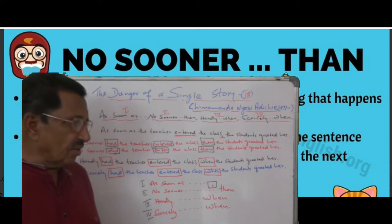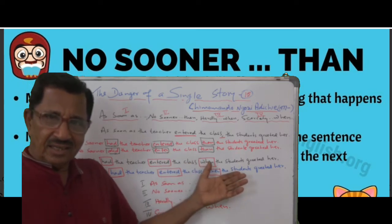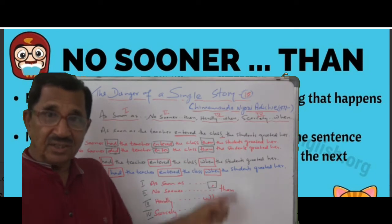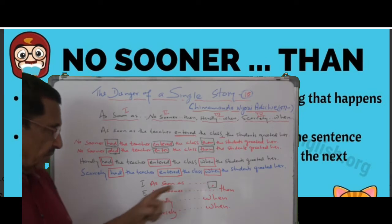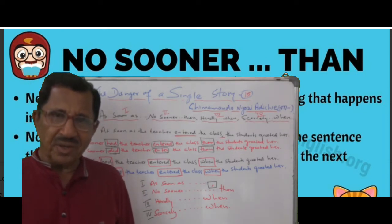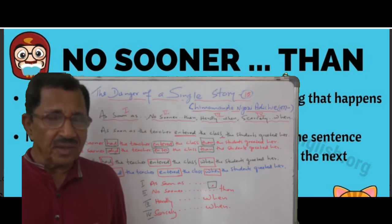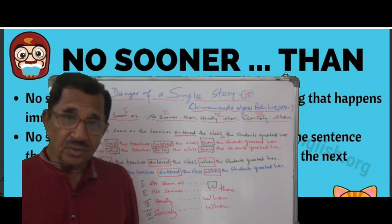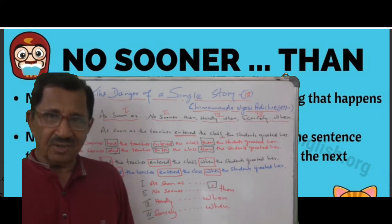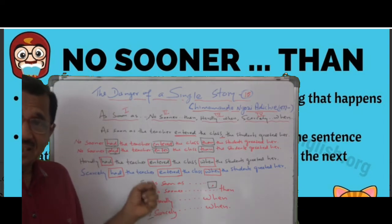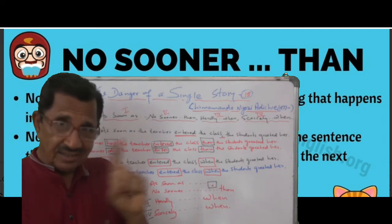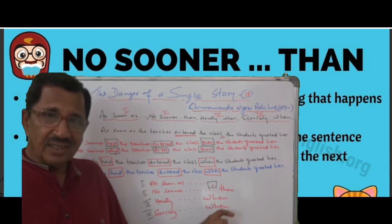Alright. And here you put 'than.' So: 'no sooner... than.' Or you can say 'scarcely.' In that case, instead of 'than,' you should have 'when.' So: 'Scarcely had the teacher ended the class, when the students greeted her' — not 'than,' but 'when.'